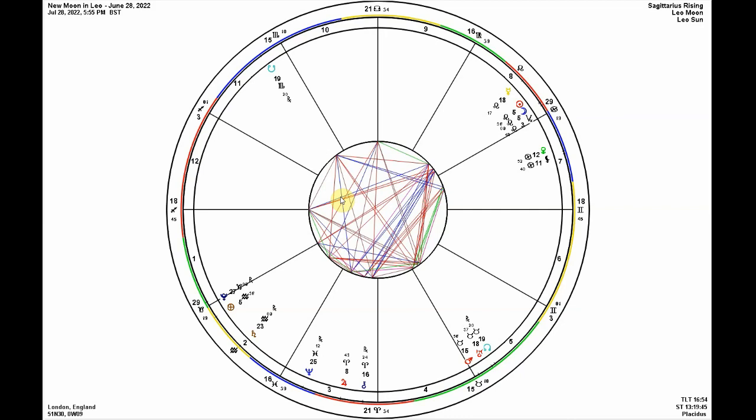And just to note, of course, that we have Jupiter stationing retrograde at eight degrees of Aries, and so it's a powerful, slow, concentrated Jupiter there. And so we have Jupiter stationing at eight degrees of Aries, and the critical degrees here are eight degrees Aries down to 29 Pisces. And so Jupiter will re-enter Pisces in October, the end of October.